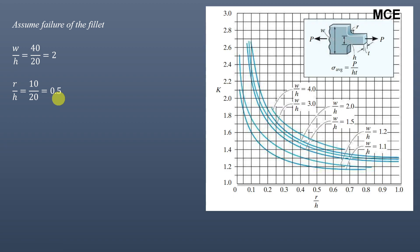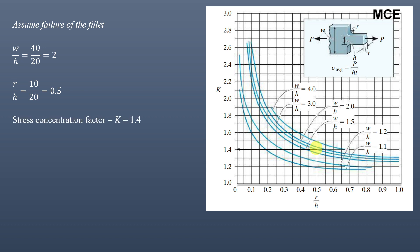After that, you use the chart for the stress concentration factor, in which the horizontal axis is the ratio r/h and the vertical axis is the value of the stress concentration factor. The curves represent different ratios of w/h. For our case, w/h = 2, which is this curve, and r/h = 0.5. Drawing a vertical line from 0.5 up to the w/h = 2 curve and then a horizontal line to the vertical axis gives us the stress concentration factor of 1.4.